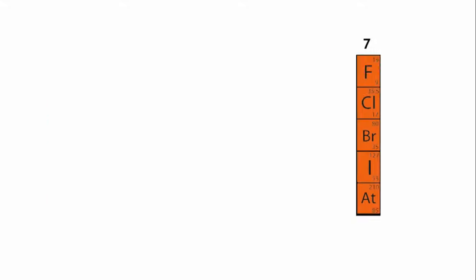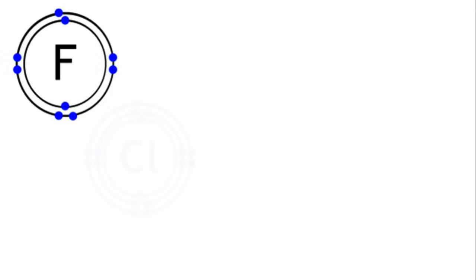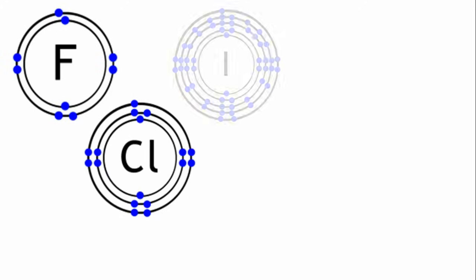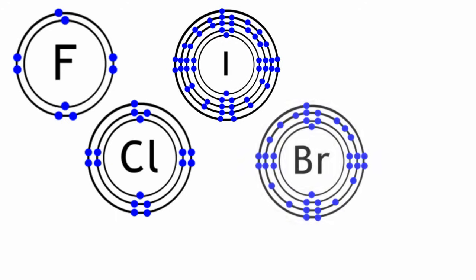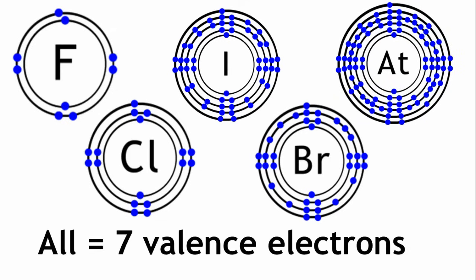For example, let's look at group 7. Fluorine, chlorine, iodine, bromine, and astatine. They all have 7 electrons in their outermost shell, and all exhibit similar chemical characteristics.